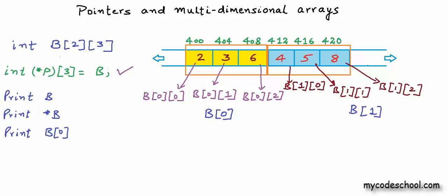Now I will write three print statements that I also wrote in our previous lesson. What will be the output if we print these three expressions: b, *b, and b[0]? For all three, the output will be 400.